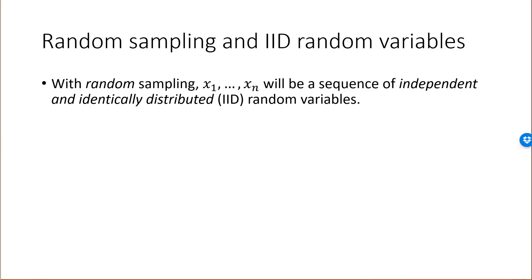Random sampling means that every point or every element in the population has the same probability of being selected. That means that the first element I pick as my first sample point doesn't influence in any way how I select my second sample point. A random sample implies that the sample points are completely independent of each other. If I have random sampling, then all these sample points viewed as random variables will also have exactly the same distribution, and that will be the distribution of the population.